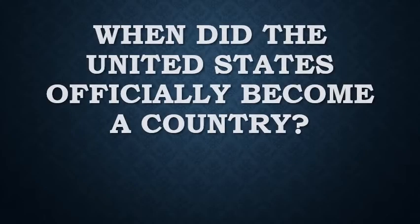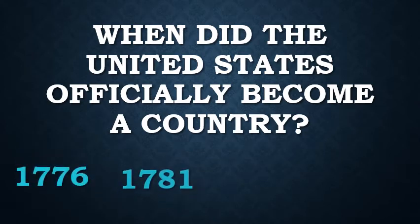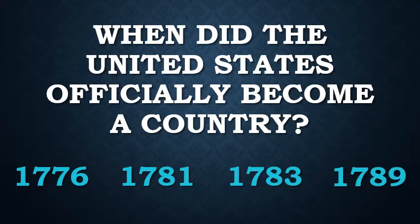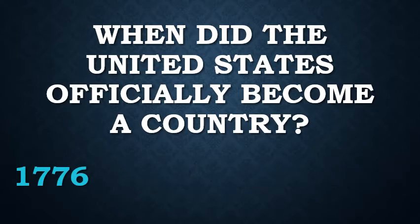So we've established that there were 13 colonies at the start of the Revolutionary War, and when we became an official country afterwards, those became 13 states. Here's a question for you — when did the United States officially become a country? This is not an official question from the test, but it's a good thing to know. Your options are 1776, 1718, 1783, or 1789. Most people will tell you 1776 — July 4th, 1776 to be exact. That is in theory when the Declaration of Independence was signed.